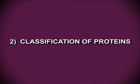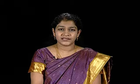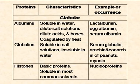The next topic is classification of proteins. There are a number of ways of classifying proteins. First is based on chemical composition and conformation, with the table as shown on the screen. Under globular proteins, examples are albumins, globulins and histones. The characteristics of albumins are: soluble in water, dilute salt solutions, dilute acids and bases, and they are coagulated by heat. Examples are lactalbumin, egg albumin and serum albumin.